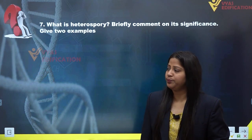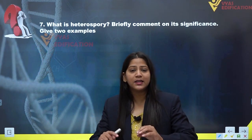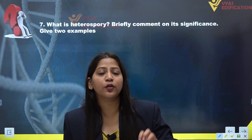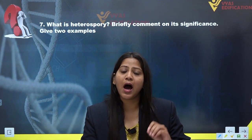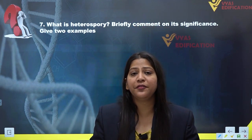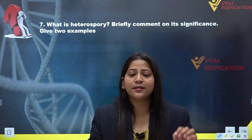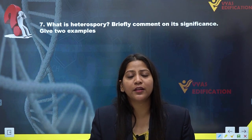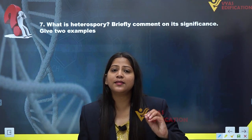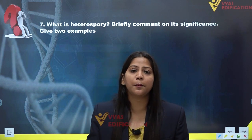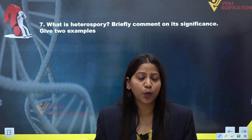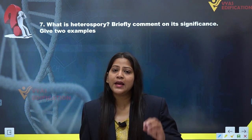These two different types of spores are produced on the same plant but they differ in size. The smaller spores are known as microspores and the larger spores are known as megaspores.